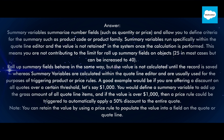A good example would be if you are offering a discount on all quotes over a certain threshold, let's say $1,000. You would define a summary variable to add up the gross amount of all quote line items, and if the value is over $1,000, then a price rule could be triggered to automatically apply a 50% discount to the entire quote. Note: you can retain the value by using a price rule to populate the value into a field on the quote or quote line.